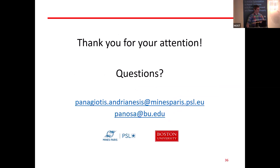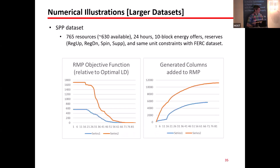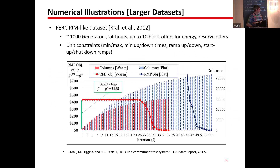Thank you, Panos. The warm start takes the optimal MILP solution as the original column. What we observe is that when starting from a feasible solution, we need to accumulate quite a few schedules — around 10,000 — until the objective function starts to drop, in order to be able to combine many schedules and reduce the gap. This is the typical plateau effect of column generation.